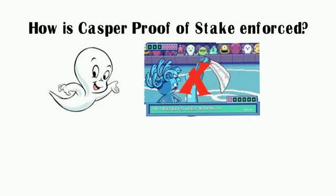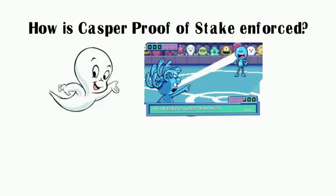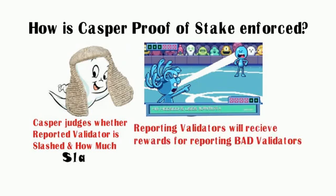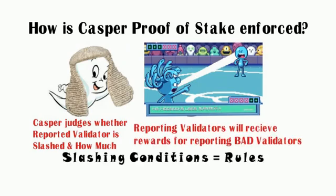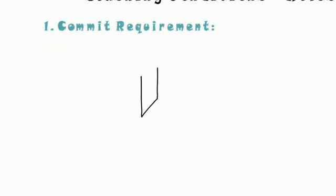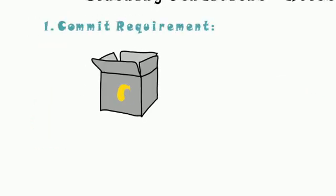Instead, both validators and Casper play a role in enforcement: validators can report bad validators, and Casper will check and deem the judgment if the reported validator broke any of the slashing conditions. For now, there are four slashing conditions.